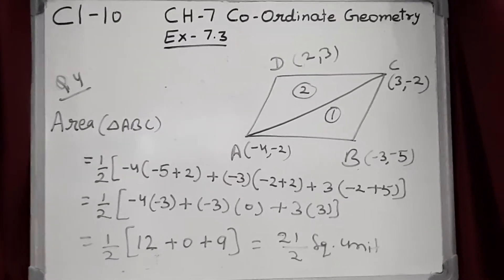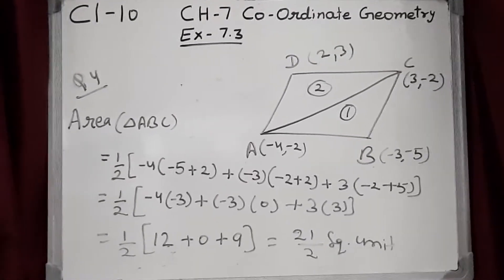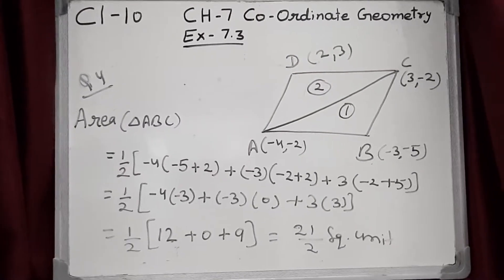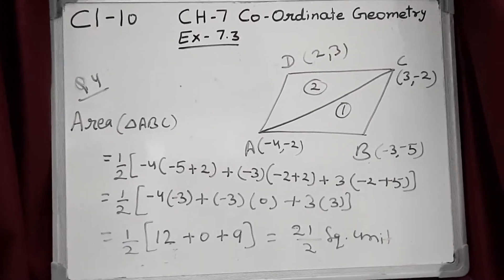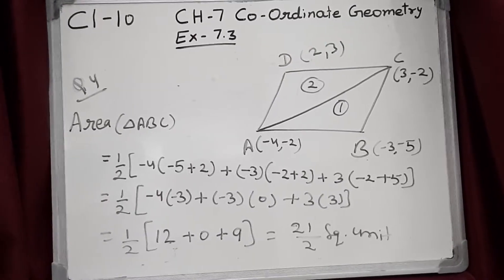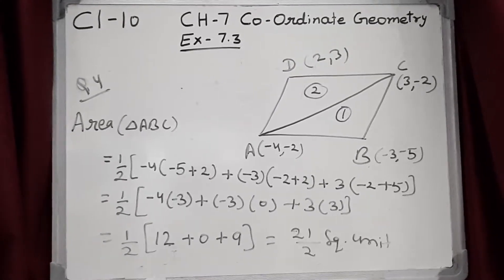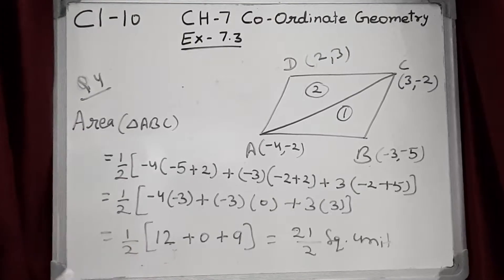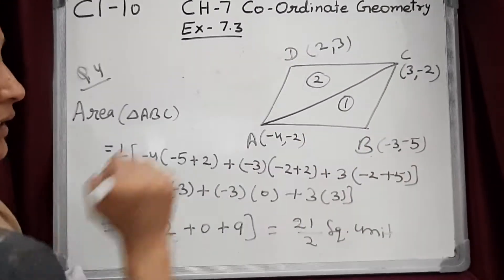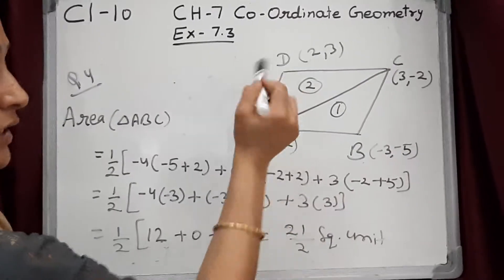Exercise 7.3, question number 4. Find the area of a quadrilateral whose vertices taken in order are: A(−4, −2), B(−3, −5), C(3, −2), and D(2, 3). We have to find the area of this quadrilateral whose vertices are A, B, C, D — four points.